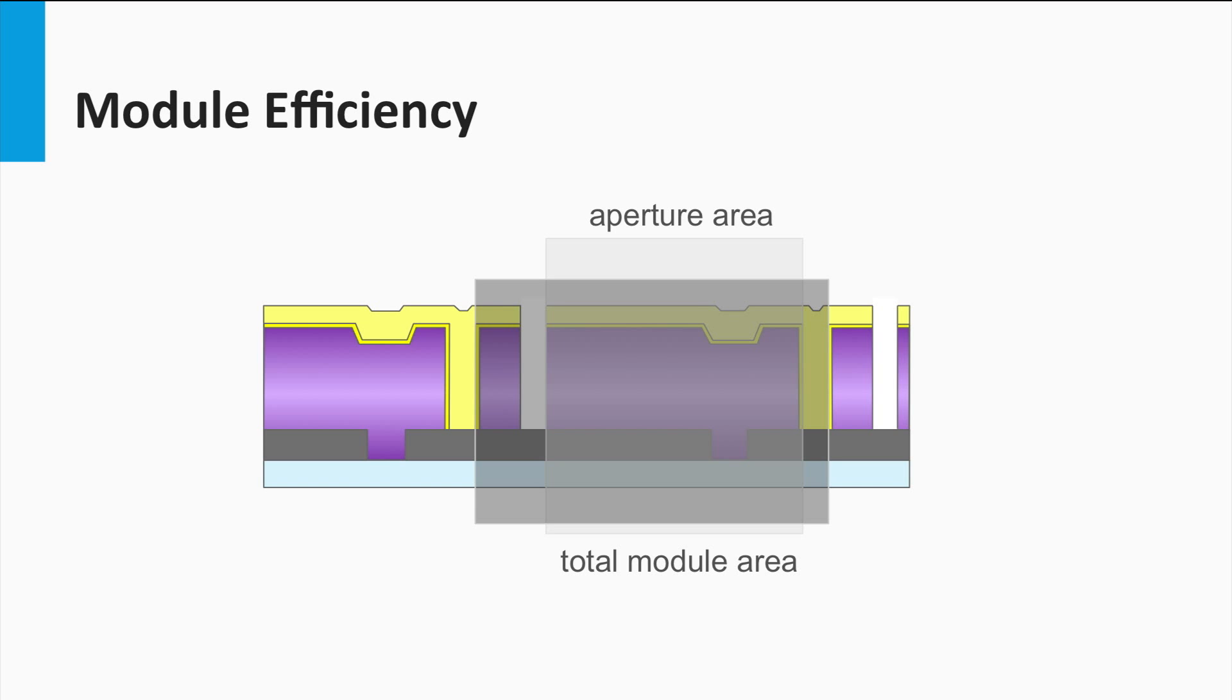Solar Frontier in Japan claims a 17.8% aperture area efficiency on a very small module of 900 square centimeters. With these results, CIGS has the highest conversion efficiency achieved among the thin film PV technologies. However, as CIGS is a rather complex material with complex deposition processes over large areas, an important challenge for the CIGS PV industry is to achieve a high production yield of CIGS modules.